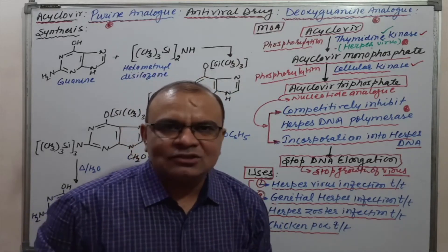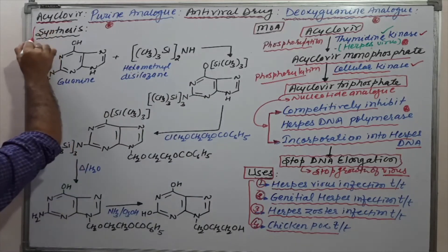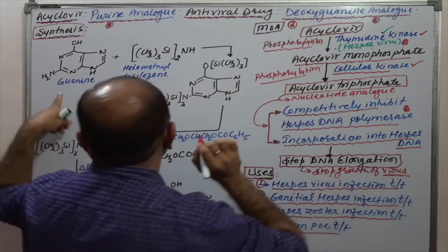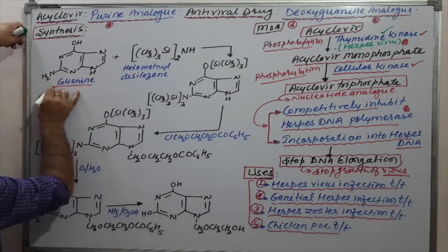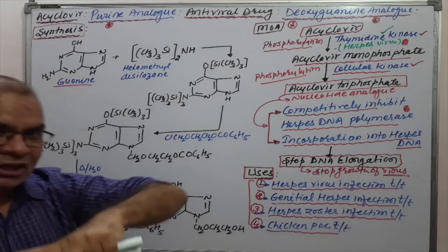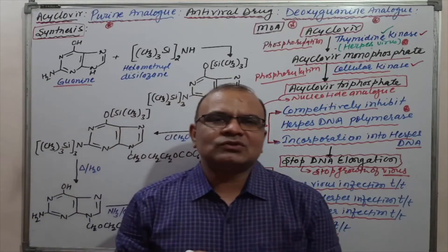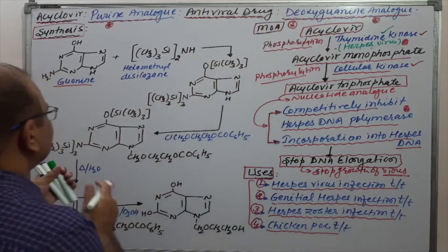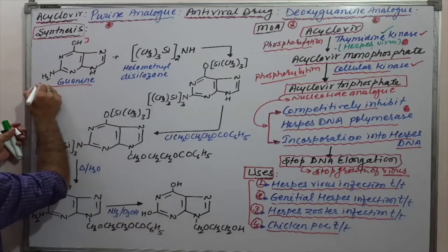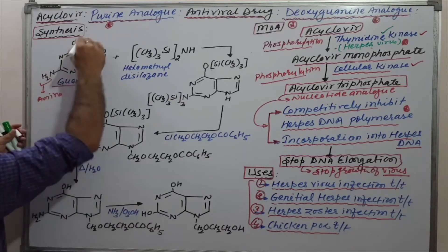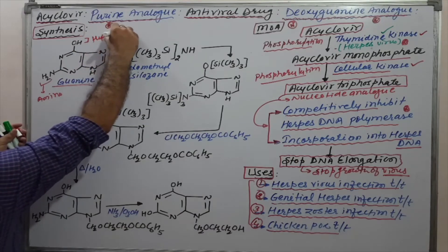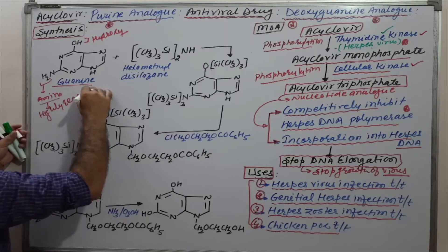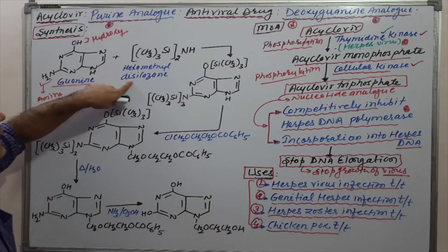Now, the synthesis of acyclovir. Since acyclovir is a deoxyguanosine analog, we start the synthesis from guanine. Guanine attached to a ribose or deoxyribose sugar becomes guanosine. Guanine has an OH group as well as an amino group — the amino group and the hydroxyl group. Both are highly reactive, so we are going to protect them using hexamethyldisilazane.